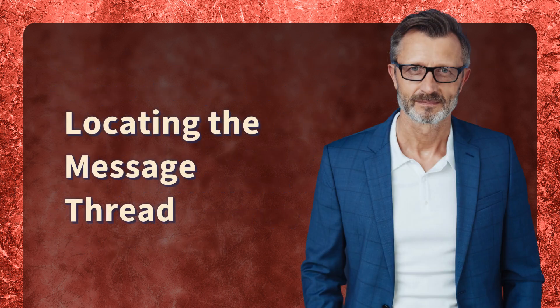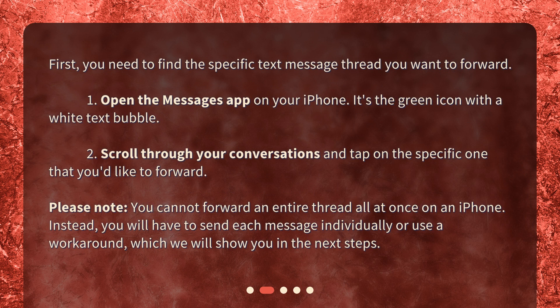Locating the message thread. First, you need to find the specific text message thread you want to forward. Open the Messages app on your iPhone — it's the green icon with a white text bubble. Scroll through your conversations and tap on the specific one that you'd like to forward.